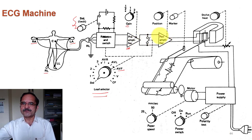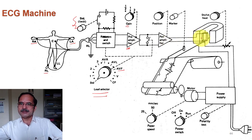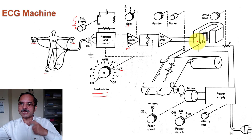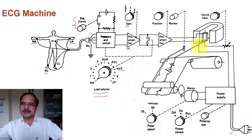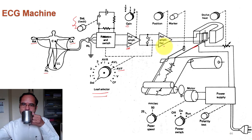The output of the pen amplifier is given to the plotter — that is why it is called the pen amplifier. This is a mechanical plotter — a galvanometer type of arrangement. There is a permanent magnet, there is a coil, and there is a pen. The motion of this pen is controlled by the electrical signal available at the output of the pen amplifier.